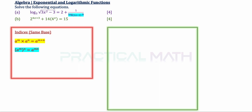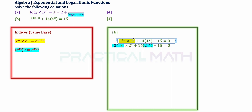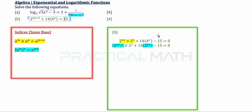In part B, 2 to the power of 4x plus 3 can be split into 2 to the power of 4x times 2 to the power of 3, using the addition of exponents law. The 15 on the right-hand side shifts to the left as negative 15. Then 4 to the power of x is rewritten as 2 to the power of 2x, and 2 to the power of 4x is rewritten as (2 to the power of 2x) squared.